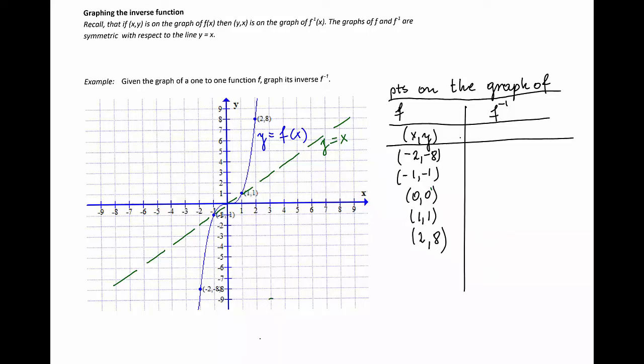We'll discuss here how to obtain the graph of function f inverse if the graph of the function f is given. We have to remember that the graphs of function f and f inverse are symmetric with respect to the line y equal x. That means that if a point is on the graph of function f, then the switched point is on the graph of f inverse.